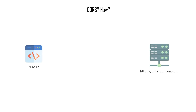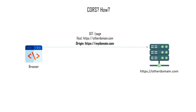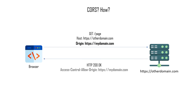How does it work? Whenever the browser makes a request to the server, it also sends an origin header, which indicates from what domain the request is being made. If the request origin is allowed, then the server in the response sends an access-control-allow-origin header with the requested domain, or an asterisk, which indicates that all origins are permitted.